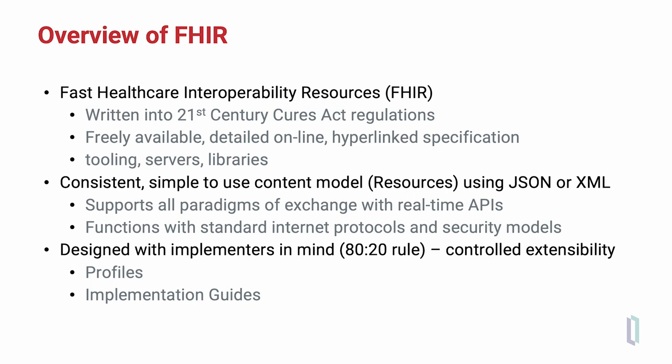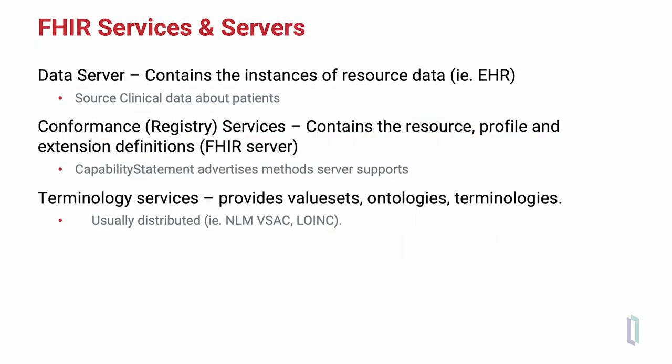These use cases are enabled by FHIR profiles and by FHIR implementation guides. For most FHIR implementations, there are three services that enable these implementations. First, a data server where the instances of FHIR resource data are accessed. Second, a conformance server that allows validation of FHIR resources and profiles. And lastly, FHIR terminology services, which provide value sets, ontologies, and terminologies. These terminology services are most often on separate servers, not necessarily on a single server.